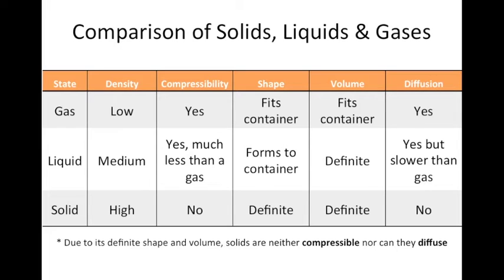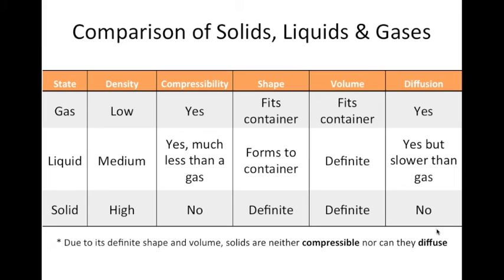Let's look back at all the properties for solids, liquids, and gases. Gases have a low density — they fill their space — and are very compressible. They fit to their container for both shape and volume, and they do diffuse. Liquids have a medium density, are compressible but not nearly as much as a gas, form to their container but not in volume. Solids have a very high density, are not compressible, have a definite shape and definite volume, and do not diffuse. Due to their definite shape and volume, solids are neither compressible nor can they diffuse.